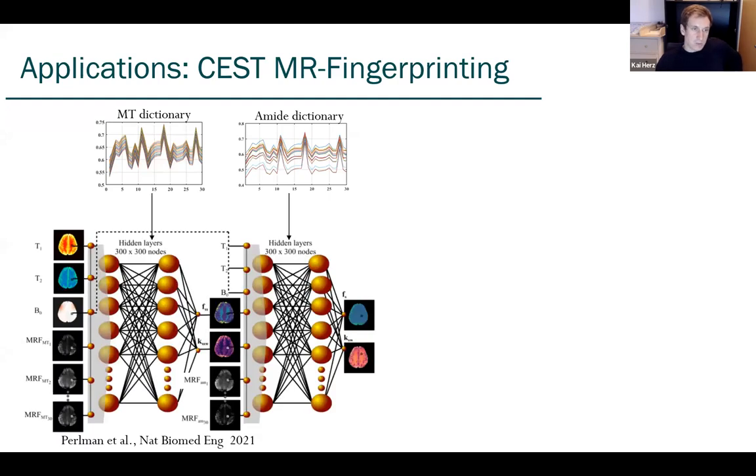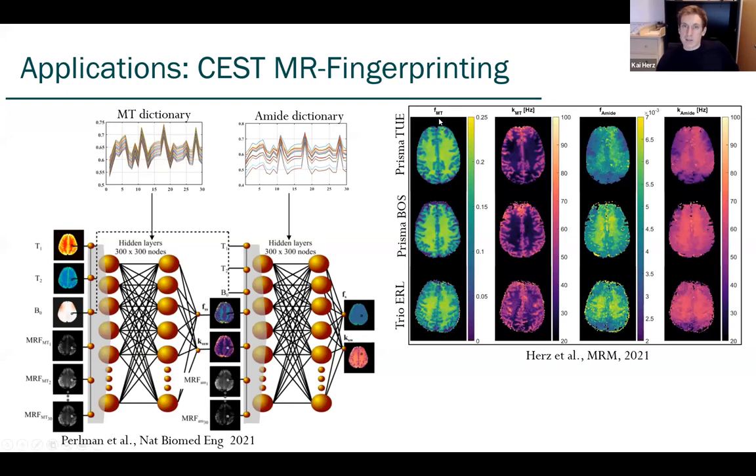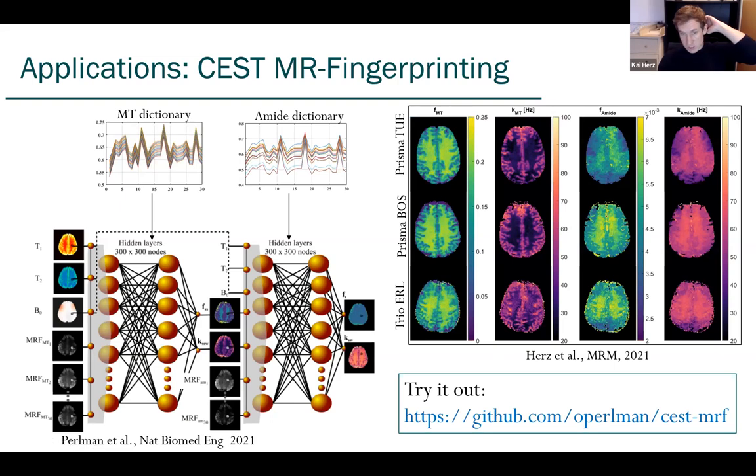This is actually data from Or Perlman from Boston. What we did there is we have a magnetization transfer sensitive trajectory, and we trained a neural network with a huge dictionary that's based on simulated data. Then we did the same for an amide-sensitive trajectory. With T1, T2, field maps as input and the Pulseq CEST sequence, the trajectories for MT and amide-specific sequences get there as an input. Then we can generate quantitative maps of concentration and exchange rate. We actually tested that on three different sites with the same sequence - two Prisma scanners in Tübingen and Boston and a TRIO scanner with a different software baseline. If you're interested in how to generate such dictionaries and also how to do dictionary matching, Or Perlman has a very nice GitHub repository with a lot of explanations and code.